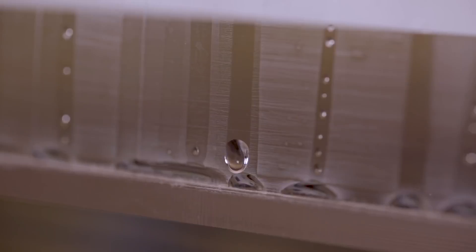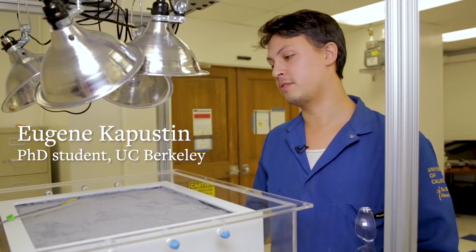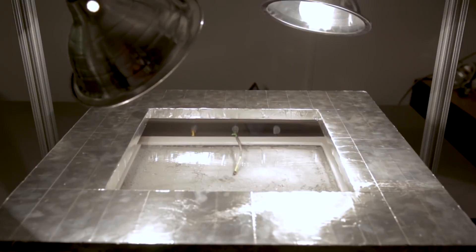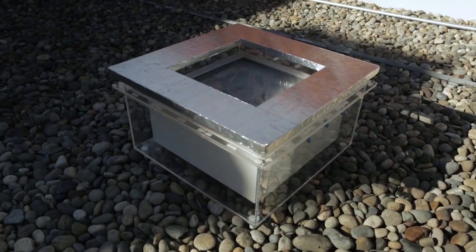In our latest work, we have the next generation water harvester. This can work in the desert where there is no supply of energy aside from sunlight. It collects water from the atmosphere at very dry conditions and then releases it so we can harvest it as liquid water using only the energy of sunlight.